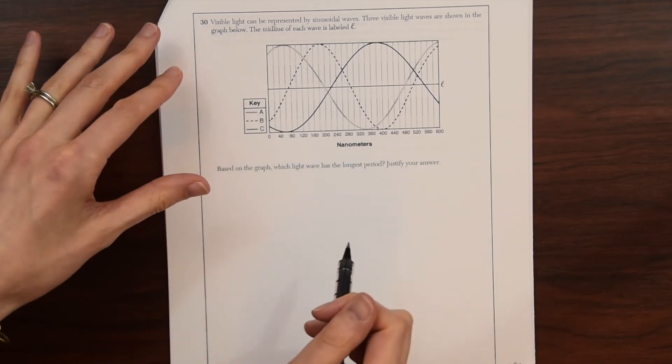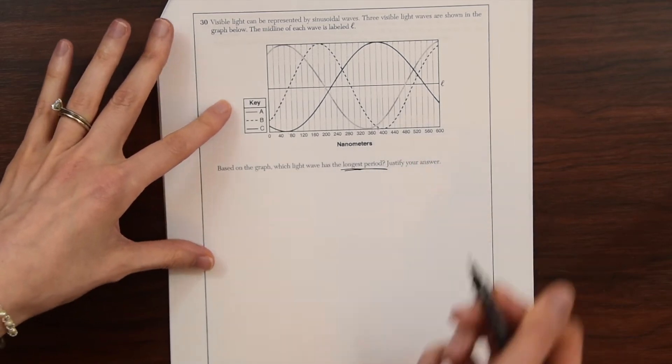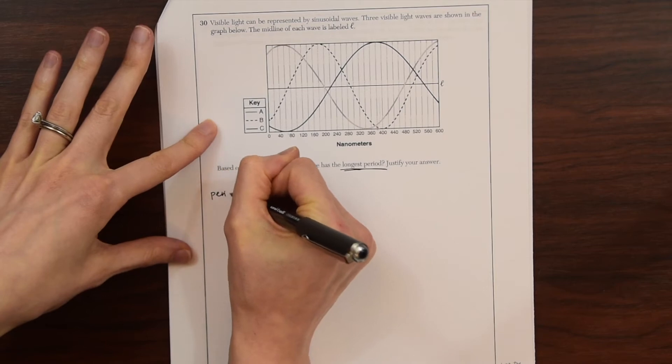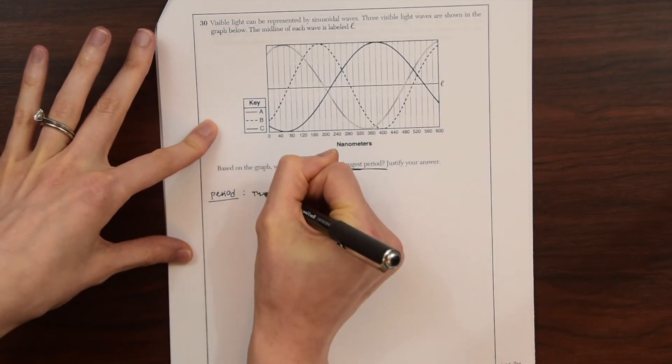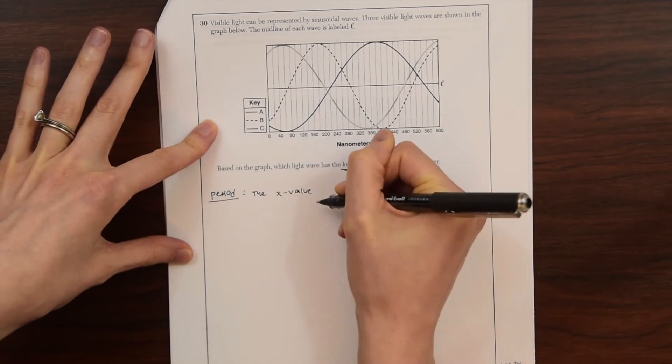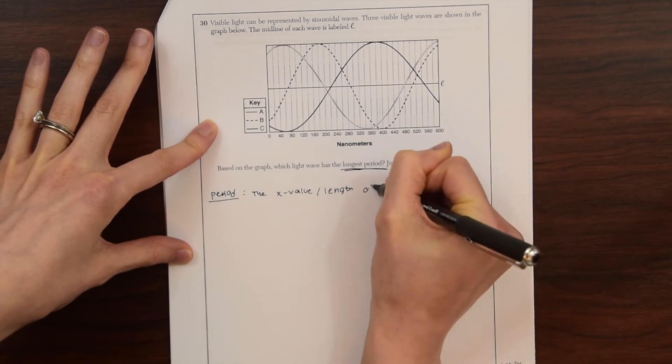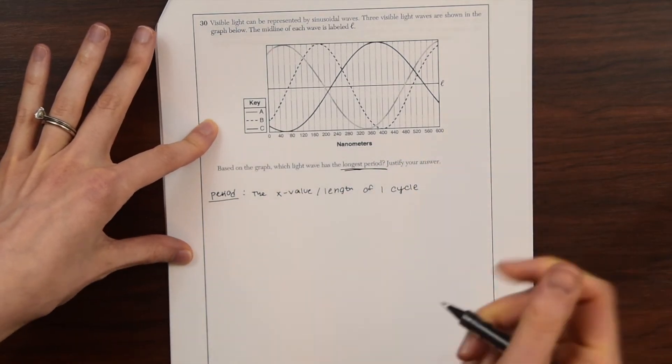Based on the graph, which light wave has the longest period? So just a reminder about what the period is. Let's write that out. The period is the x value slash the length of one cycle. In this case, one sine cycle.